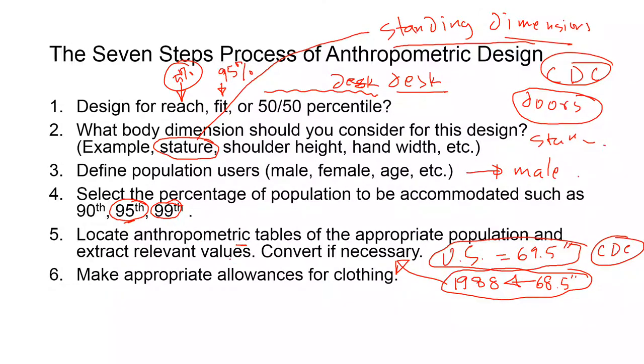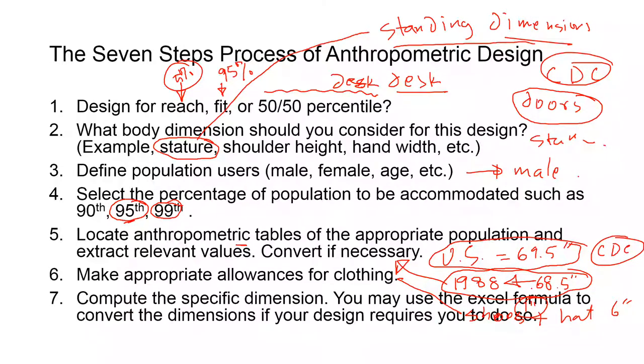You have to also think about the clothing adjustment. For example, somebody's wearing shoes, maybe someone is wearing a Lincoln hat which is about six inches tall. Shoes heel height for male population is about one inch, so you have to consider that and then you add all of them up.